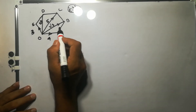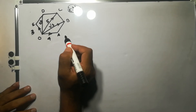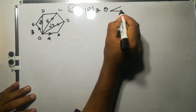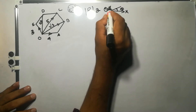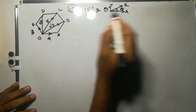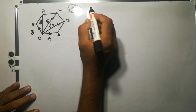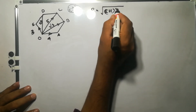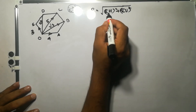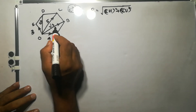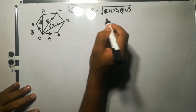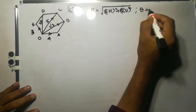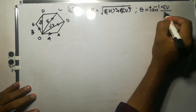Now we have to find out the resultant force of all these forces. We need to find R — its magnitude and the direction theta with respect to the horizontal x-axis. The equation we are going to use is R equal to square root of (σh² + σv²), where σh is the sum of horizontal components of all the forces and σv is the sum of vertical components. To find the angle theta, the equation used is tan inverse of (σv divided by σh).